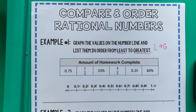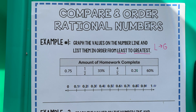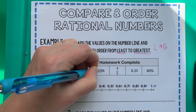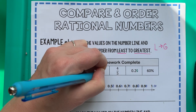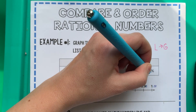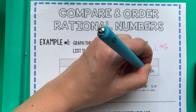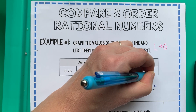The next easiest thing to change to look like money would be those percents. Remember how we change a percent to a decimal — it's really simple. We move the decimal two times to the left. If those percentages don't have a decimal in sight, put it on the right, then move it one, two places to the left. So that's going to be like 33 cents. And doing the same thing to the other one — two times to the left — that's going to be like 60 cents.